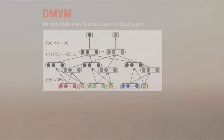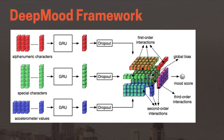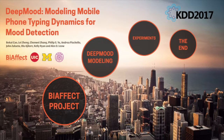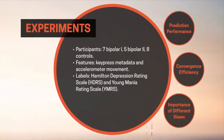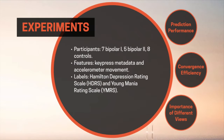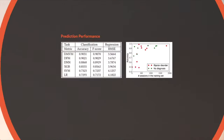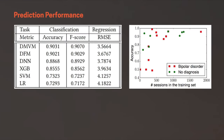This is the general framework of our proposed DeepMood approach. We conducted experiments to predict the Hamilton Depression and Young Mania Rating Scale from the typing dynamics data. Experimental results show a promising prediction performance of our proposed DeepMood approach.